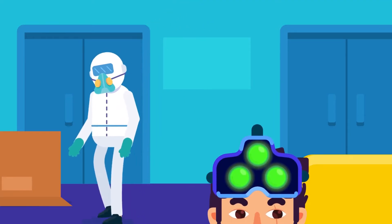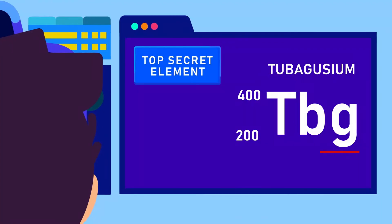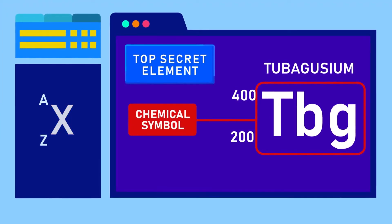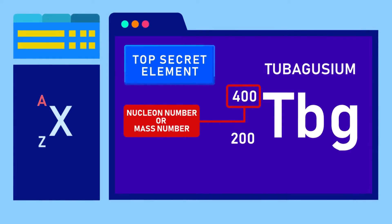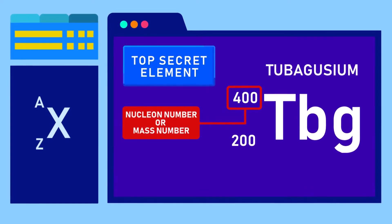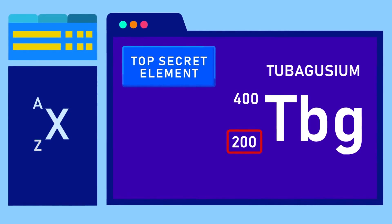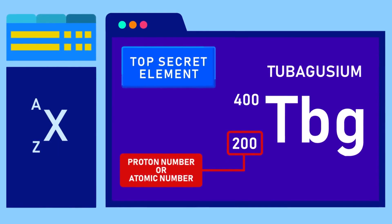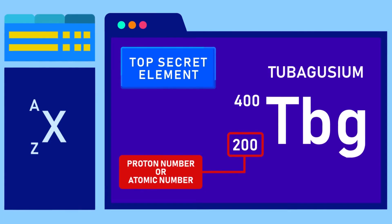An element is written as AZX, where X is the chemical symbol of the element, A is the nucleon number or mass number written in superscript left of the symbol, and Z is the proton number or atomic number in subscript, also left of the symbol.